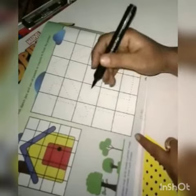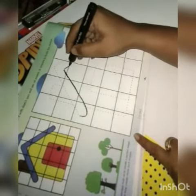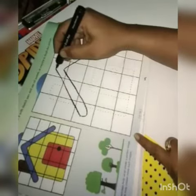Hello students, today we will learn about a grid exercise in your art and craft book. There are a few columns given and a picture of a hut is made. I am using a black sketch pen.